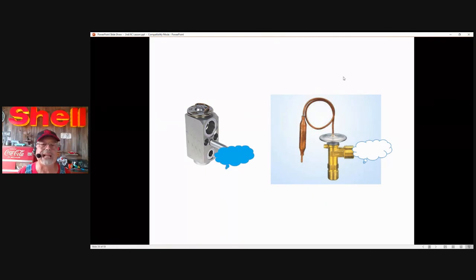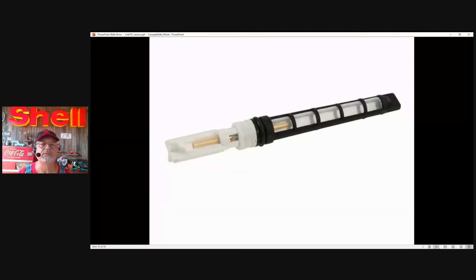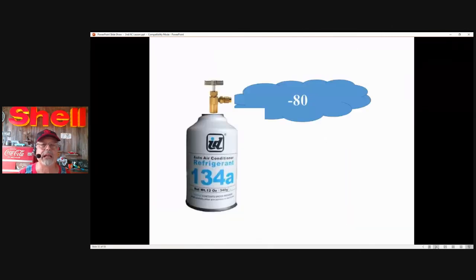Here is our two styles of expansion valves. This is the block style. This is the original style. They're still underneath the hood. This one, expansion tube, orifice tube. The tube itself is that part of that brass tubing or straw on the inside. The rest of this is just the screen for filtering purposes. Expansion tube, orifice tube. This is where the magic happens.